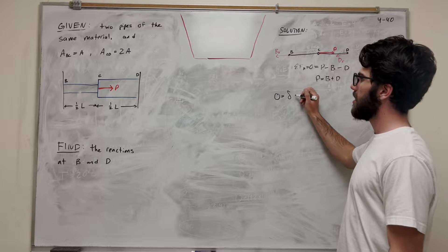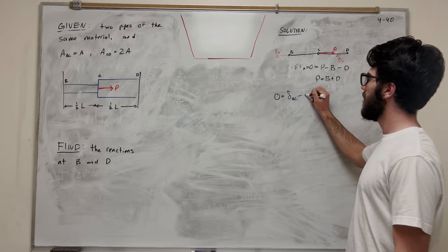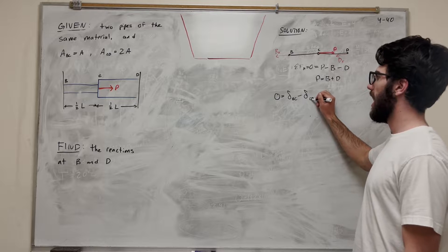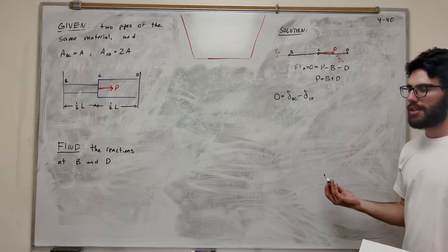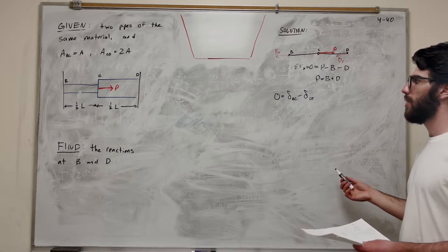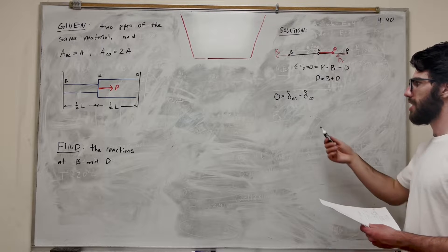So displacement BC, whatever that is, if you subtract it from the displacement of CD, has to be equal to zero. That's just what our configuration is. So this is our equation. Now we need to expand this.